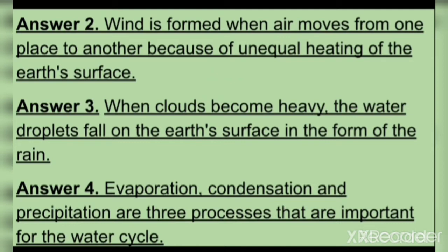Answer 2: Wind is formed when air moves from one place to another because of unequal heating of the Earth's surface. Answer 3: When clouds become heavy, the water droplets fall on the Earth's surface in the form of rain. Answer 4: Evaporation, condensation, and precipitation are three processes that are important for the water cycle.